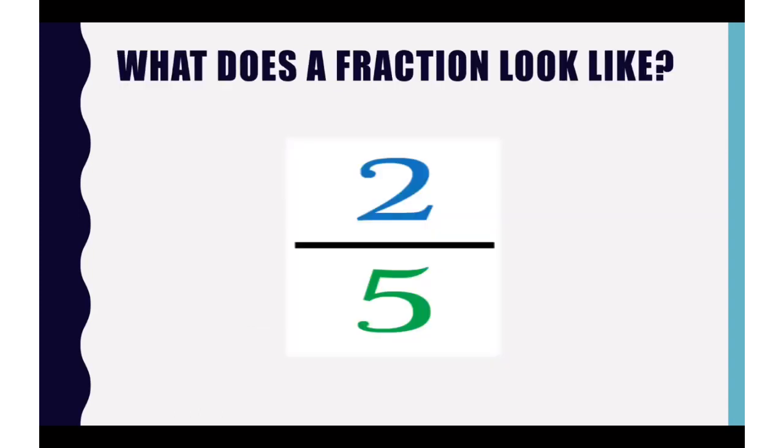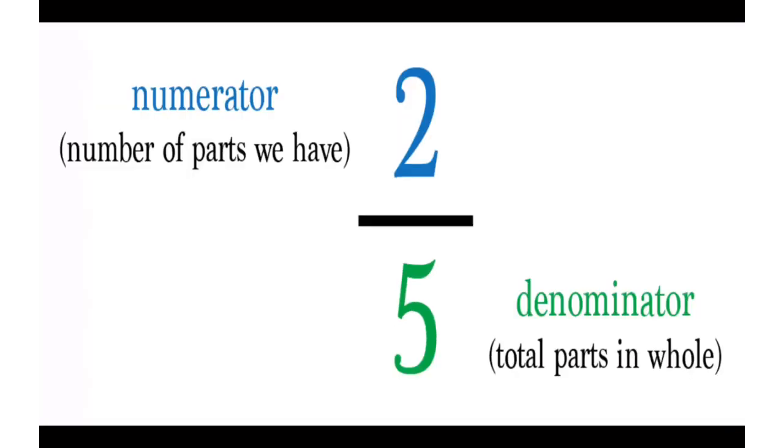So what does a fraction look like? Now, a fraction looks just like this, 2 over 5. You have a numerator, which is a top number, and the numerator tells the number of parts we have in the fraction. And then you have the denominator, which is the bottom number, and that tells you how many parts the whole is divided into.